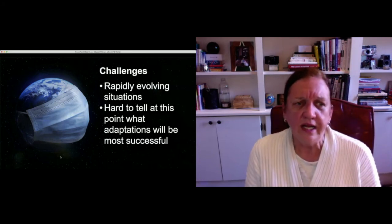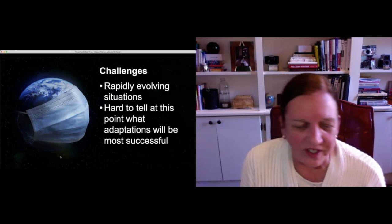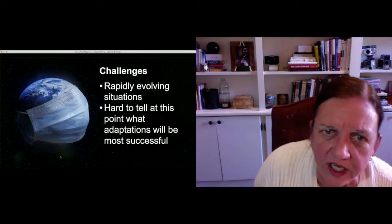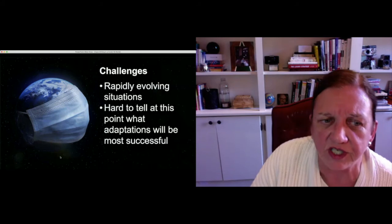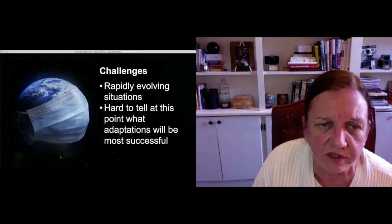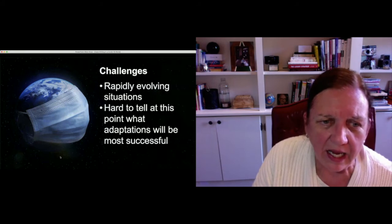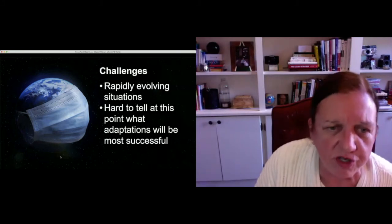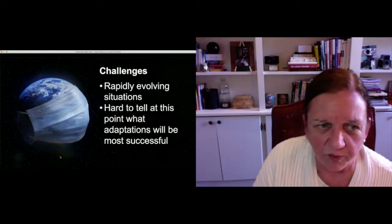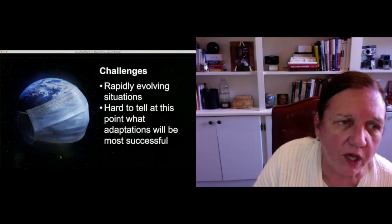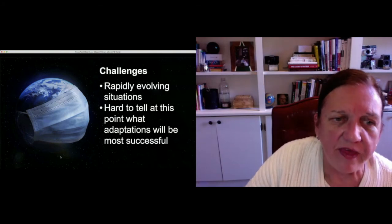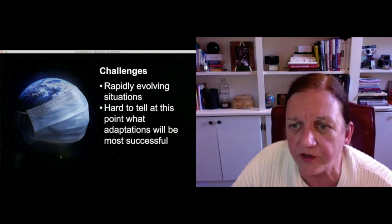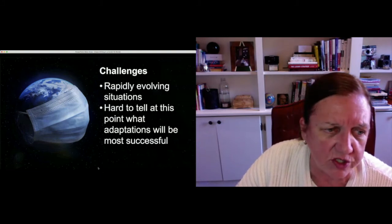The second point: it's hard to tell at this point what adaptations will be most successful. That's been the other issue with some of the cases I've received — they're writing about organizations as being particularly successful at adapting to the virus and the pandemic. But there really isn't any data that supports that because it's all too new. We really don't know how things are going to turn out. We've seen companies do things very quickly because whatever they tried didn't work. So that's going to make it a little bit more challenging to write a case.